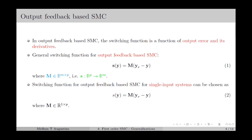For example, the most commonly used form of the switching function for output feedback-based SMC is given in equation number 1, in which S is a function of the output error, where Yr is the reference and Y is the actual output. We consider the system has P number of outputs and M number of inputs, so the matrix M will be an M by P matrix — a mapping from the P-dimensional output space to the M-dimensional input space.